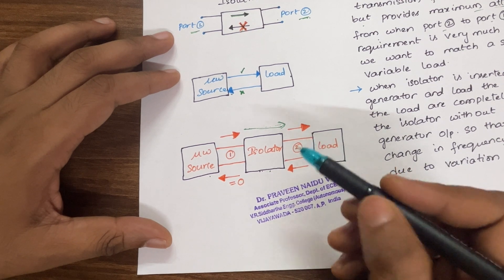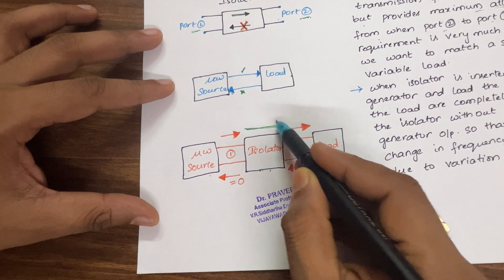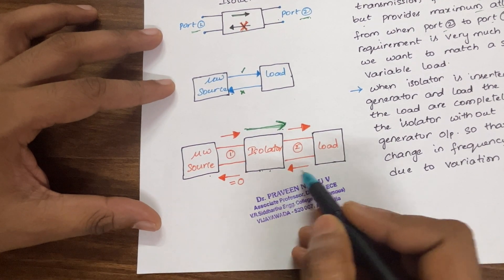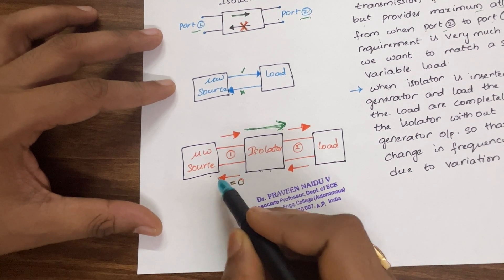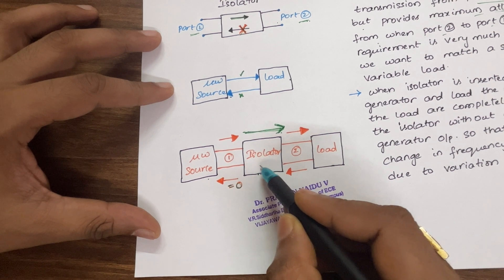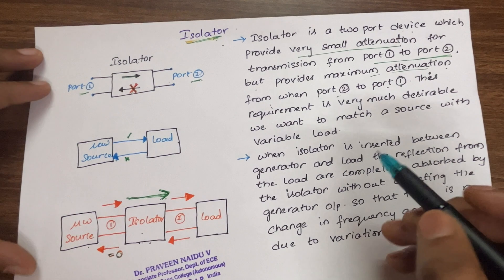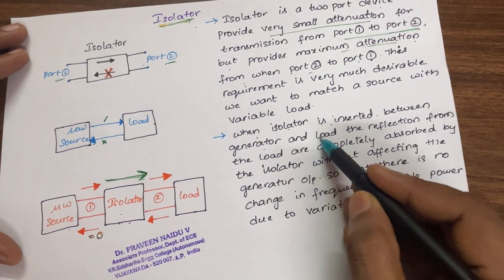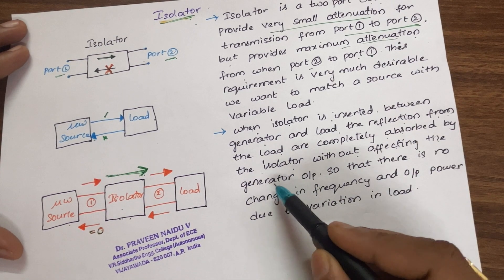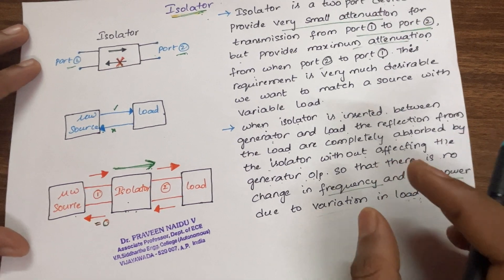When you look at the physical microwave component of an isolator, on top of the device an arrow mark is printed that indicates the direction of power flow. The reflected power from load to source is almost zero at the source — whatever reflections are coming due to impedance mismatching, that reflected power is absorbed by the isolator. When an isolator is inserted between a generator and load, reflections from the load are completely absorbed by the isolator without affecting the generator output — meaning there is no change in frequency or output power due to variation in the load.